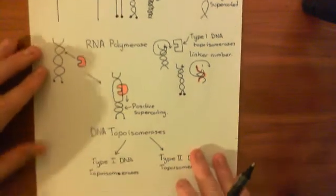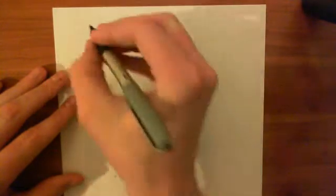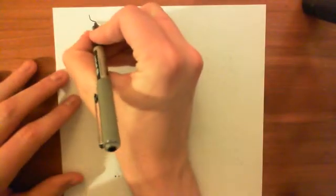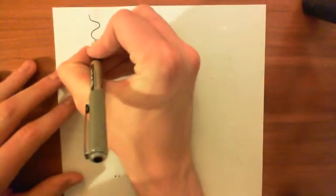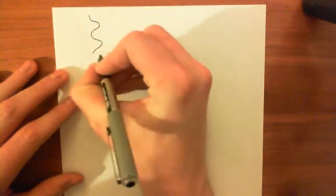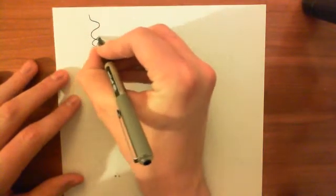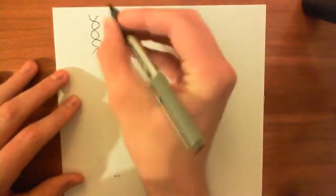So those are type 1 DNA topoisomerases. So now let's discuss type 2 DNA topoisomerases. The difference between type 1 and type 2 is that type 1 only cuts a single strand. Type 2 are going to cut both strands.